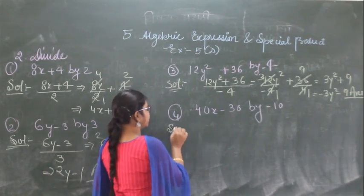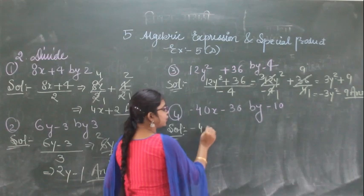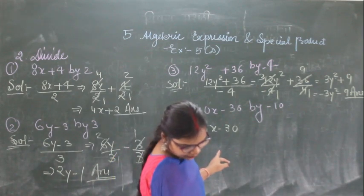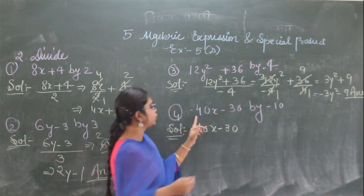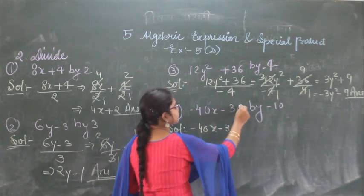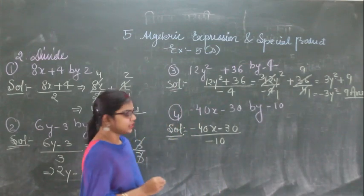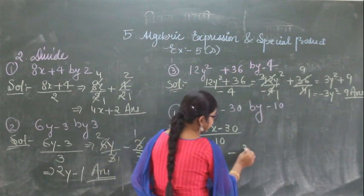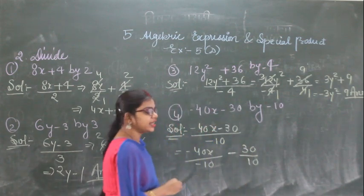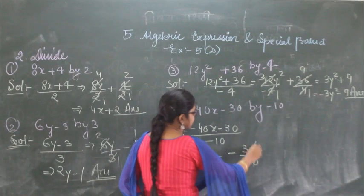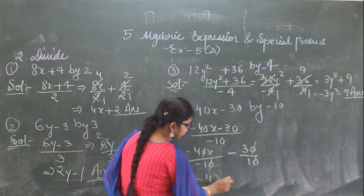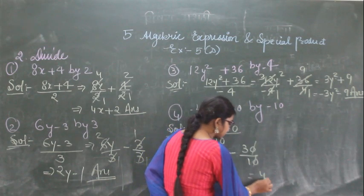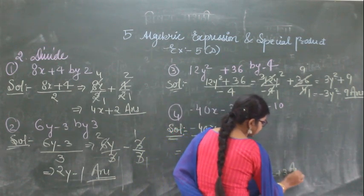For the fourth question, minus 40x minus 30 divided by minus 10: split as minus 40x divided by minus 10, minus 30 divided by minus 10. After cancellation you get minus 4x minus 3, but when you multiply the minus sign inside, you get 4x plus 3 as the answer.